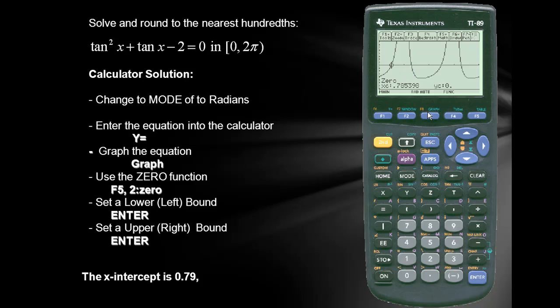So I'll use F5. We're going to calculate the zero. I'm going to set a lower bound for our second zero or a left bound for our second zero. So I'll lock that in with enter. We'll set an upper or a right bound. So I'll move the cursor to the right of our zero. I'll press enter. And we have the second intercept. The second intercept is 2.03.